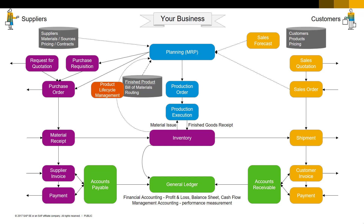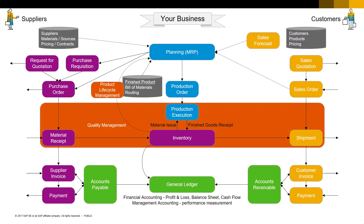In a wide array of industries, quality management is a critical function. Quality management helps you monitor your materials to make sure they are always free of defects and always fit for use. A good quality management system extends your materials database by storing specifications on what materials are acceptable, and storing any results you record when you test your materials against those specifications.